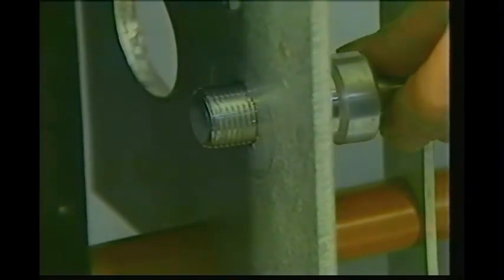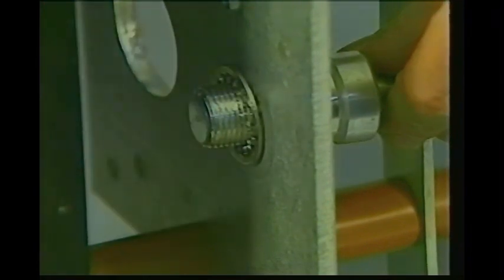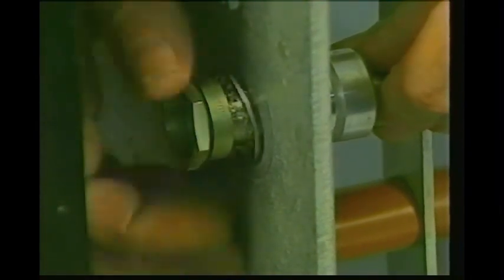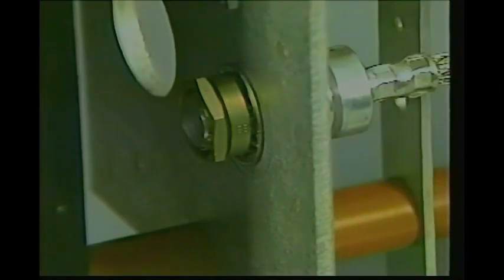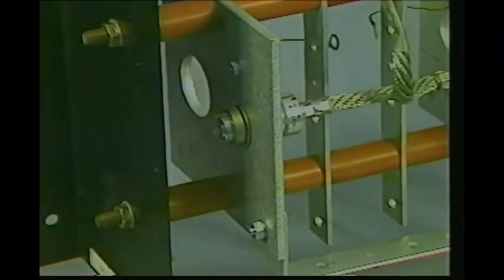Insert the diode, put the lock washer on, then put on the breakaway nut. Make sure that the round portion is against the heat sink plate. Tighten it finger tight. Then turn with a wrench until the hex portion breaks off.